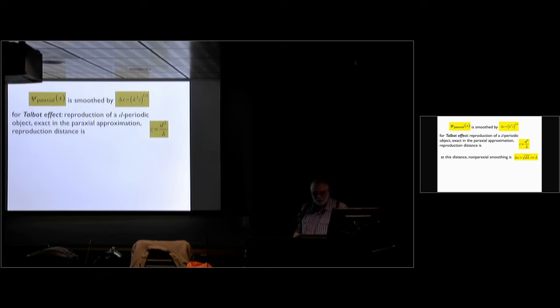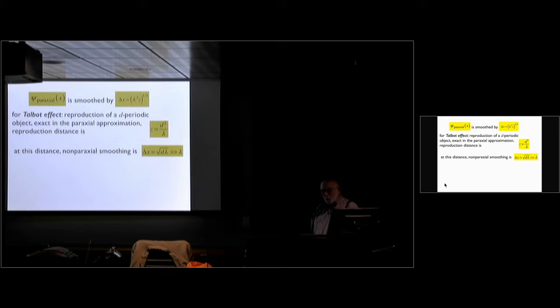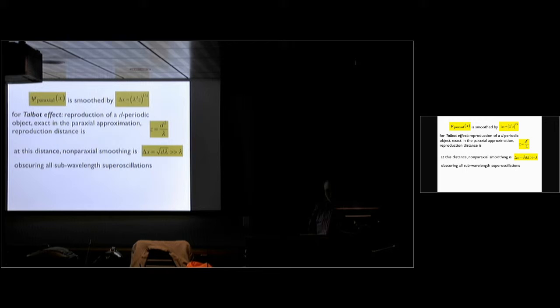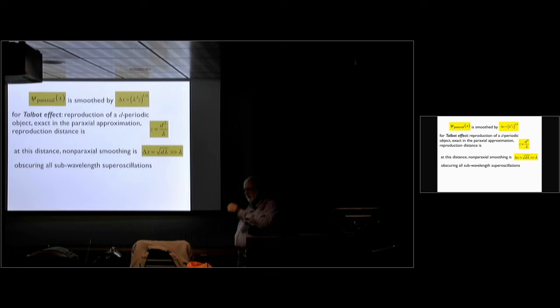At that distance, the non-paraxial smoothing — you put z = d²/λ — gives a smoothing of order √(dλ). The point is that's always much greater than the wavelength because d is always going to be greater than the wavelength for this to be an intelligent procedure to apply at all. And so that obscures all the sub-wavelength oscillations. So super-oscillations are exquisitely sensitive to non-paraxiality — this won't work, that's the point.